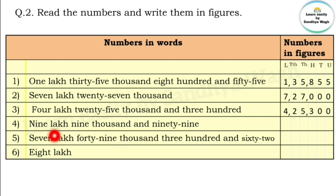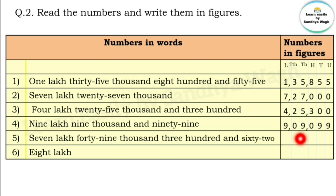Next number: nine lakh nine thousand and ninety nine. Lakhs: nine, write 9. Thousands: nine thousand — no ten-thousands, so write 0 in the ten-thousands place and 9 in thousands. Hundreds were not mentioned, so write 0 in hundreds place. Ninety nine has nine tens and nine units — write 9 and 9. The number is 9,09,099.